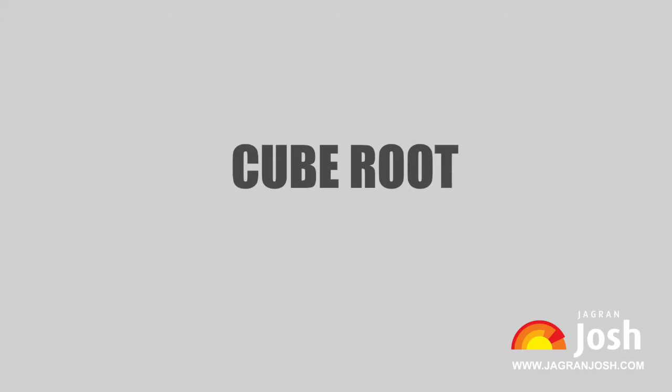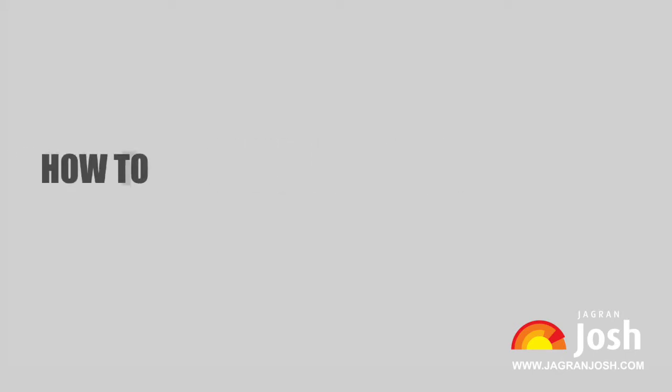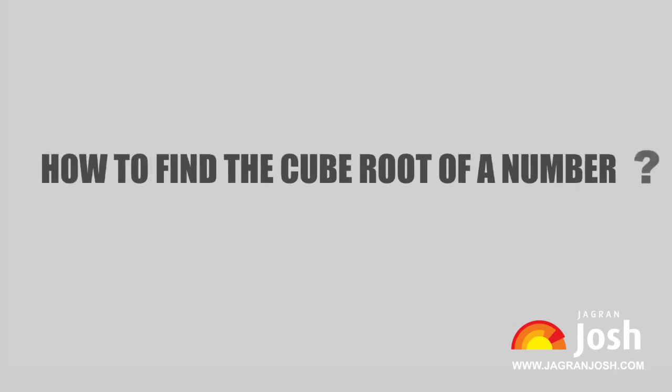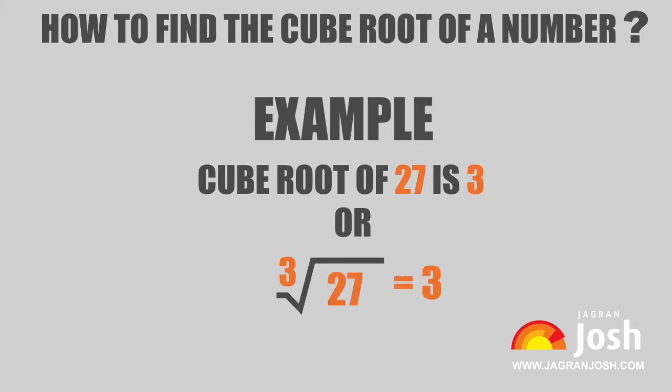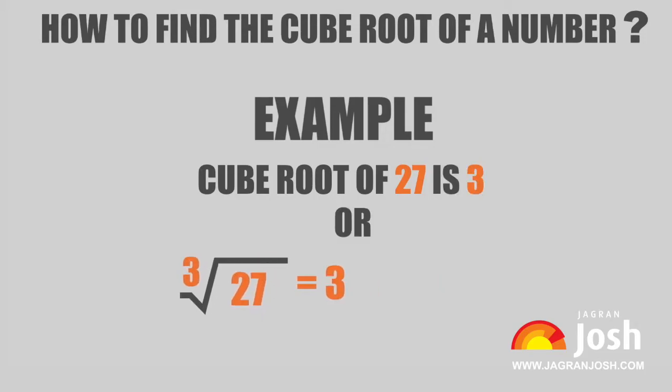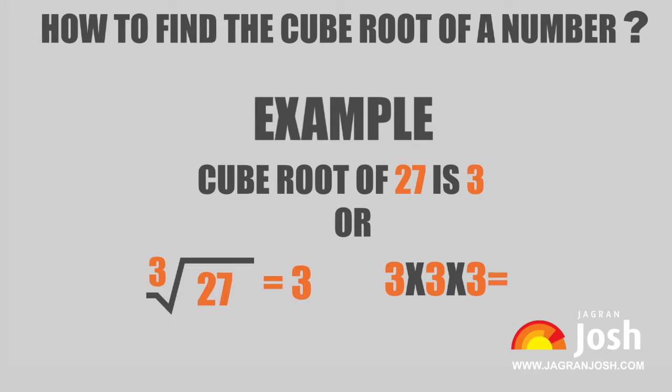Finding cube root in a quick manner can be very important for fast calculations in any competitive exam. The cube root of a number is another number that, when multiplied three times, makes the first number. For example, the cube root of 27 is 3 because 3 into 3 into 3 is 27.